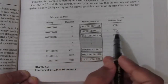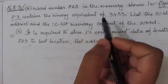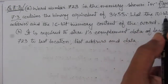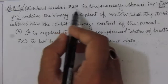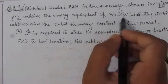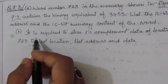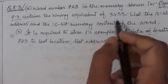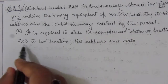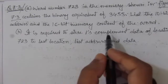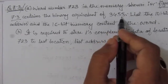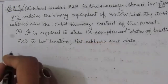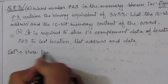For this problem we have to find the binary equivalent of memory address 723 and the binary equivalent of the data 3455. We must represent the decimal address in a 10-bit binary address and represent the data as 16-bit memory content. In the second part, it is required to store the one's complement of the data at location 723 into the last location, which is location 1023, represented as 10 binary ones.